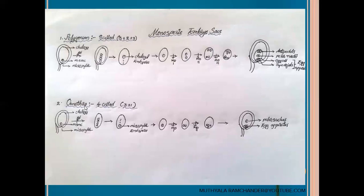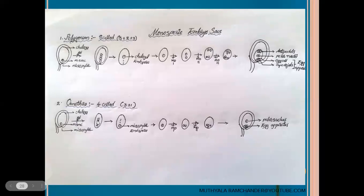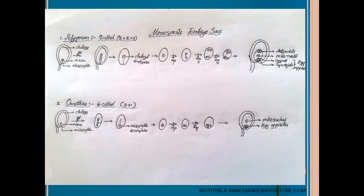Another monosporic type of embryosac is the enothera embryosac, identified in enothera species of plants. In the complete ovule, from the nucellus at the micropylar region, only a single cell acts as the megaspore mother cell. It participates in reduction division to form four haploid megaspores arranged linearly at the micropylar region. The micropylar end megaspore develops into the complete embryosac — this is called the enothera embryosac. The remaining three megaspores are degenerated or disappeared.